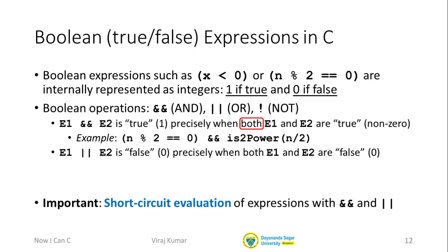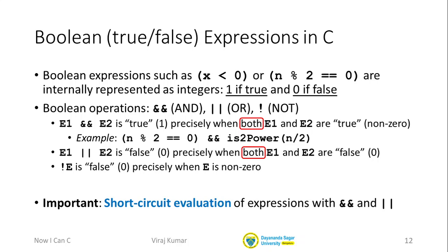The last important Boolean operator is NOT, represented as an exclamation mark. The expression !E is false when E is true — meaning if E is non-zero (internally true), then !E is false — and vice versa. We will look at more code involving Boolean expressions later on, so you may find it useful to come back to this video and review this material.